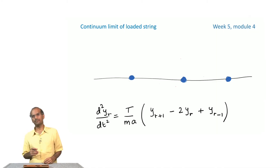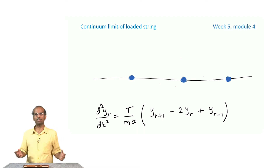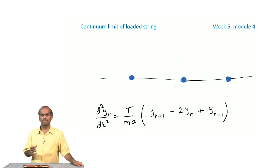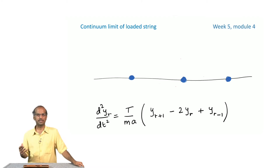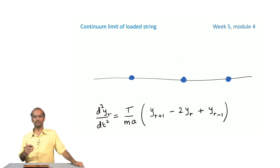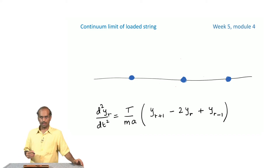In cases where you have a smaller number of particles, you can work out all the details and basically write down the pattern of oscillation for each and every case.